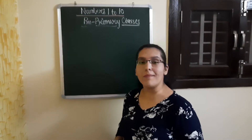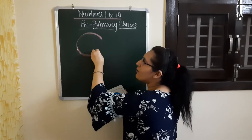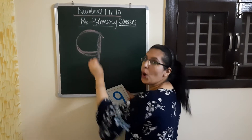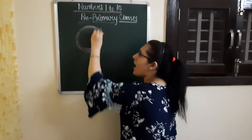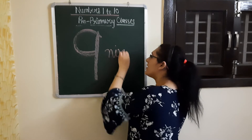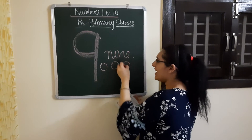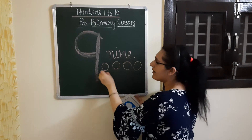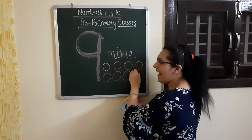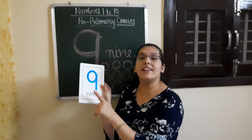Now comes number 9. So let us make it: halfward out and down we go. Halfward out and down we go. This makes number 9. 1, 2, 3, 4, 5, 6, 7, 8 and 9. This is number 9.